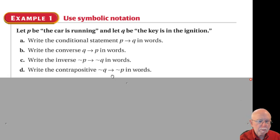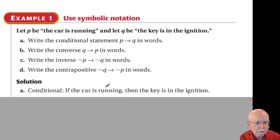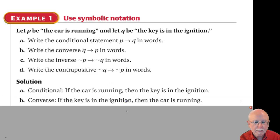Now here are some examples using symbolic notation. Let P be 'the car is running' and Q be 'the key is in the ignition.' Writing the conditional statement P implies Q in words: if the car is running, then the key is in the ignition. For the converse, I take my conclusion, put it after the 'if,' take my hypothesis and put it after the 'then': if the key is in the ignition, then the car is running.